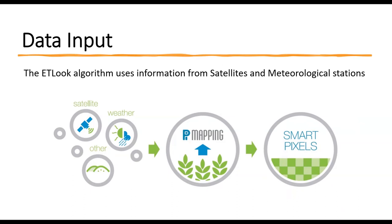Meteorological stations provide information on wind speed, air temperature, relative humidity, and solar radiation. The data from different sources are matched based on the time to make sure all information aligns.